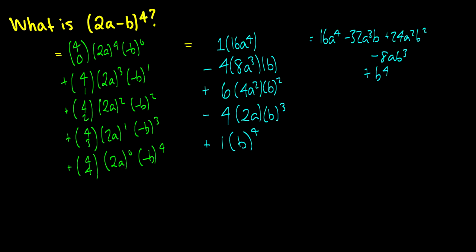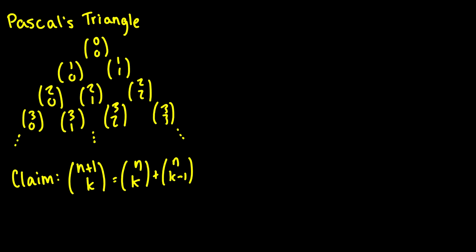There is something very cool that relates to this 4 choose 0 through 4 choose 4 pattern, and that is called Pascal's triangle. If we label the rows starting with row 0: 0 choose 0, then the next line 1 choose 0 through 1 choose 1, and we just keep increasing n as we go down, going through all k values from 0 to n.